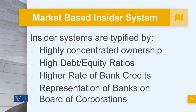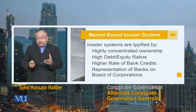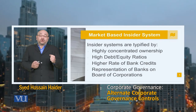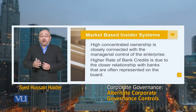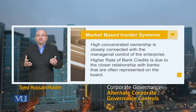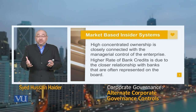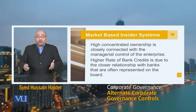When we talk about the market-based insider system, it is typified by highly concentrated ownership, high debt-equity ratios, a higher rate of bank credits, and representation of banks on the board of corporations. This is a more limited model — bank corporations lending huge amounts of money to the corporation are part of the board. The ownership is limited to the hands of a few, and the majority shareholders have a very strong equity base and thereby maintain control. Most members of the board are actually the large shareholders.